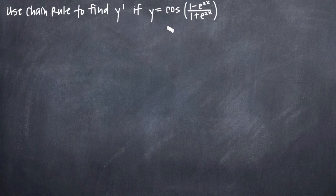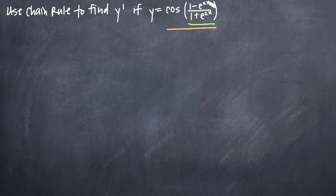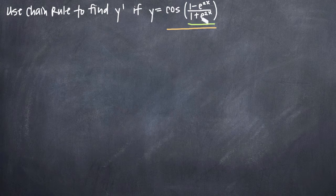The outside function will be cosine of this entire inside quantity here, and the inside function will be literally what's inside this cosine function. When using chain rule, we'll always take the derivative of the outside function first, leaving the inside function completely untouched as if we're ignoring it completely, and then after we've done that, we'll multiply by the derivative of the inside function.